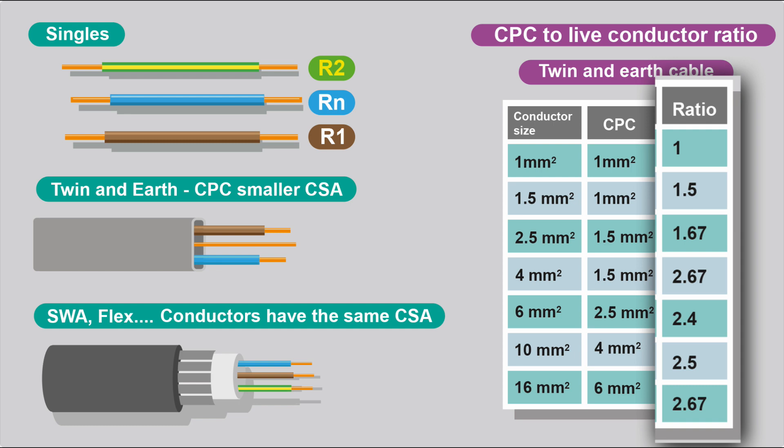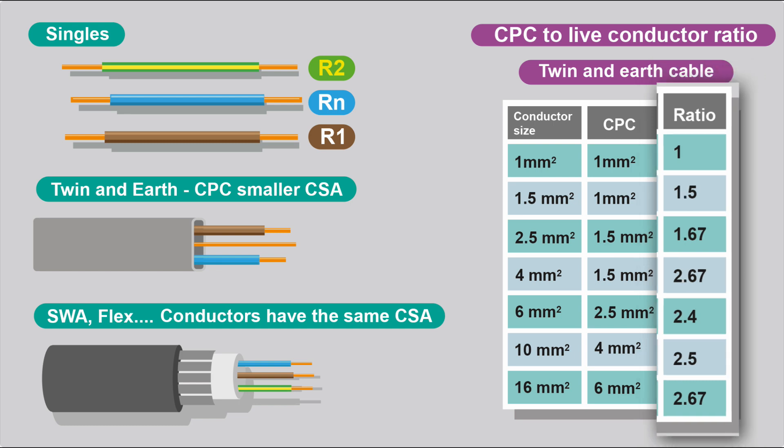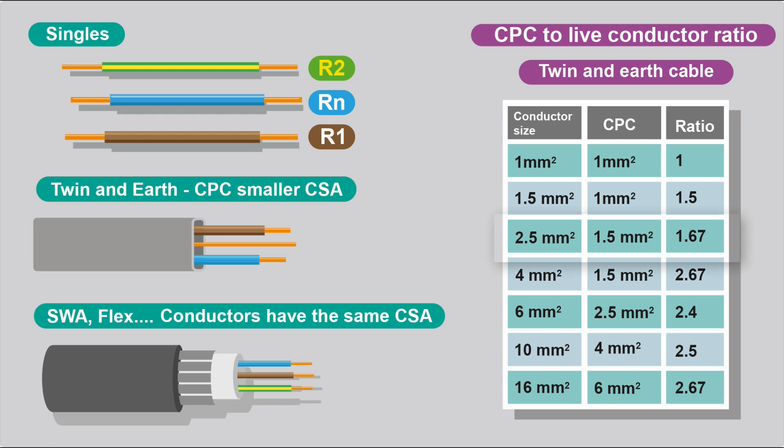We'll take the example of 2.5mm² cable. So if you've got 2.5mm² twin-and-earth, the live conductors will be 2.5, the CPC will be 1.5. So the ratio, the difference between the CPC and the line conductors is 1.67. And we can verify the resistance readings we are getting correlated to the length of cable.